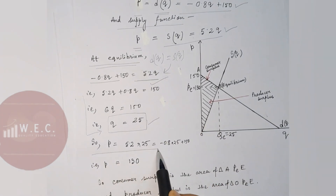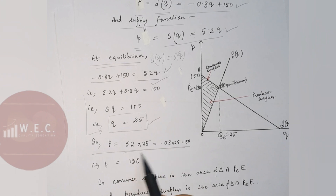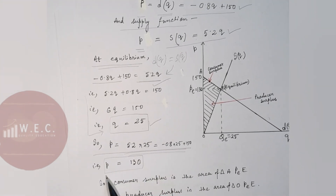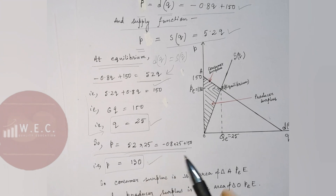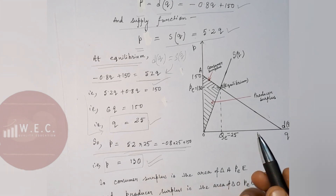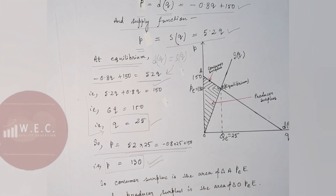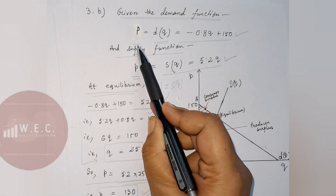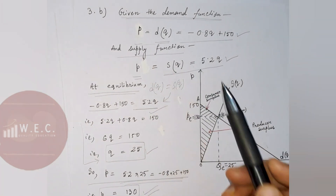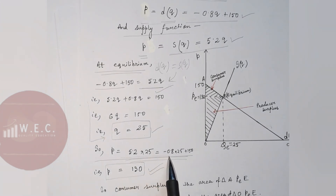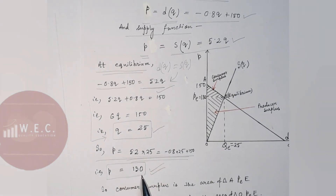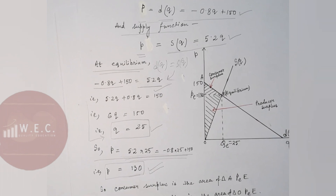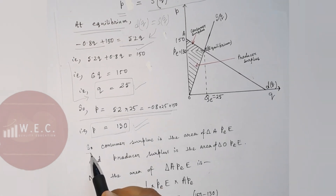We can get the equilibrium price by putting the value of q — that is, the output — into the demand function or the supply function. In either function, we can substitute the value of quantity to get the price.